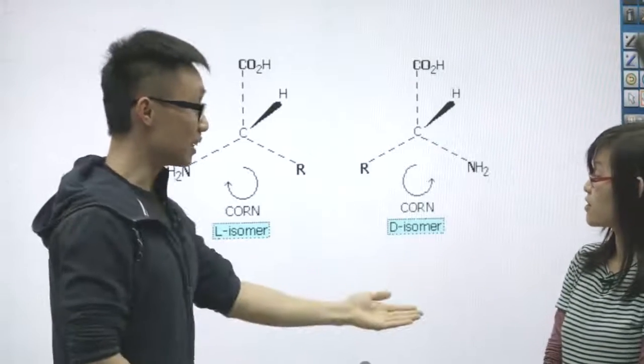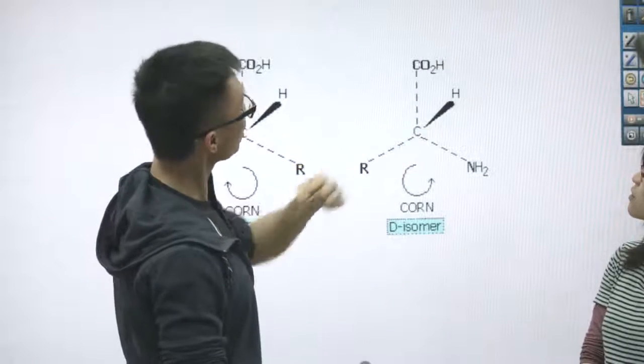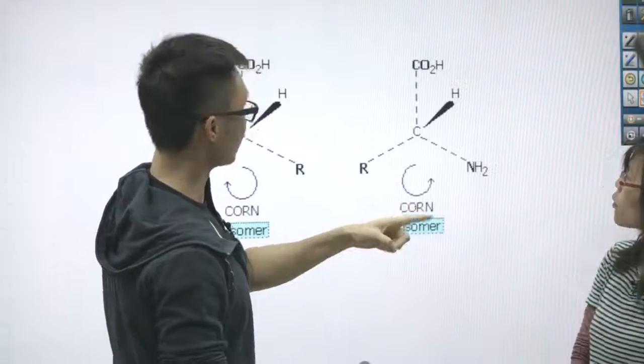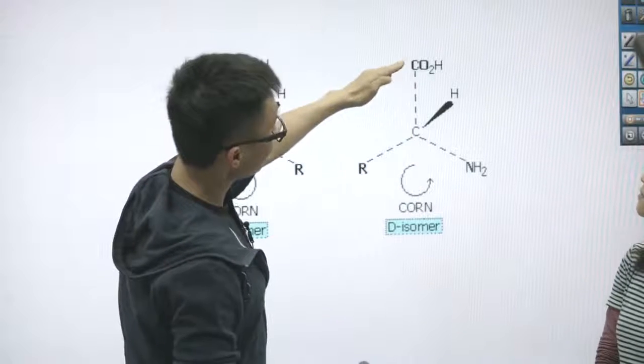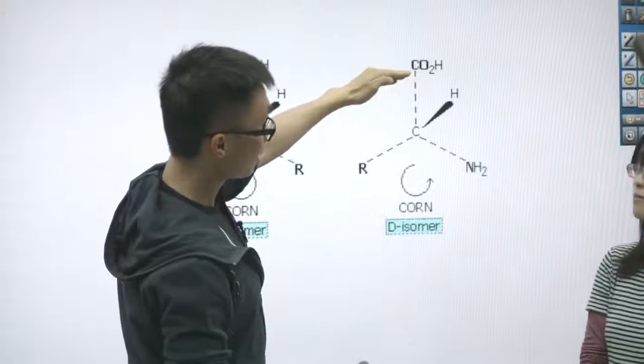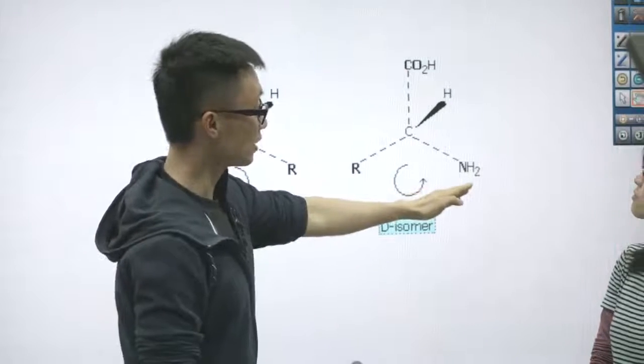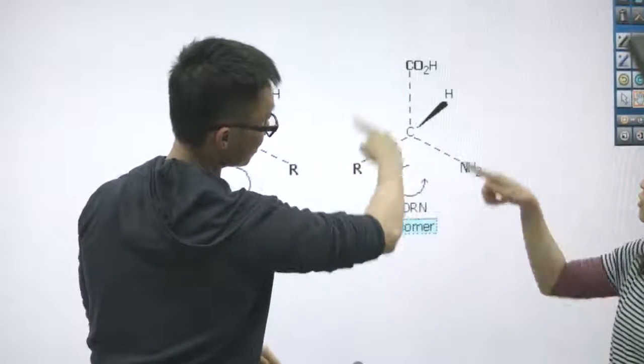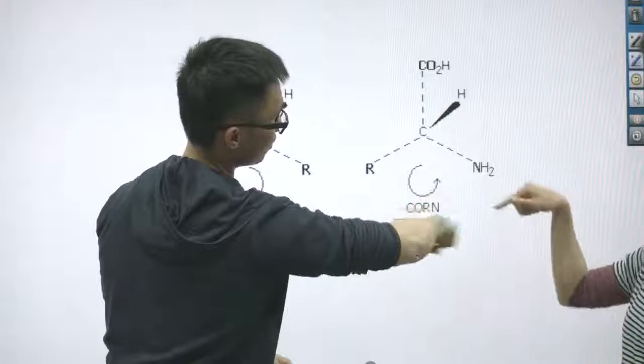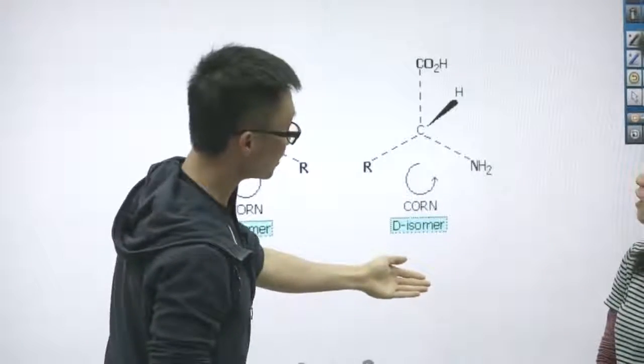Okay. So let's take the L-isomer as an example. First thing first, the hydrogen here is pointing towards you. Remember that. That's the first rule. And then with this as the point, the first one is a C-O-O-H. The second is here, R, CORN. And the next one is nitrogen. So when you do this, what is this motion? This is anticlockwise. So if it is anticlockwise, we name it the L-isomer.